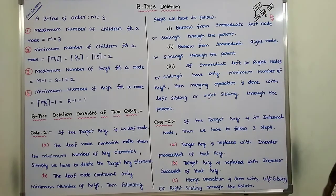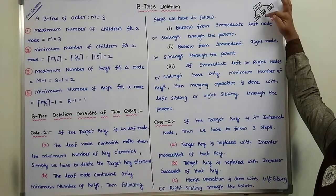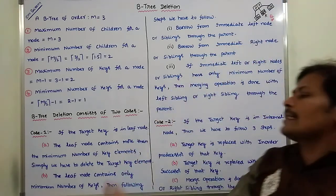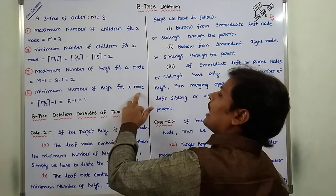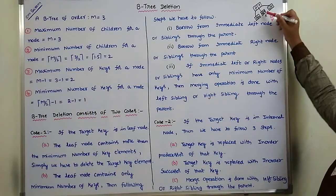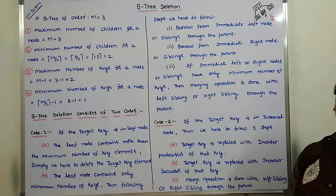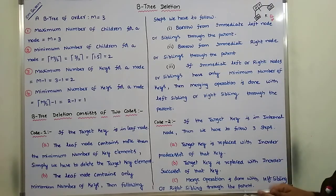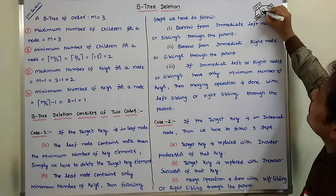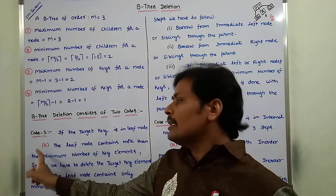Since the target key Q is at the leaf node and that leaf node contains two key elements — more than the minimum of 1 — we simply delete Q. After deletion, only R remains. Now this leaf node contains the minimum number of key elements. This is Case 1, Step A.